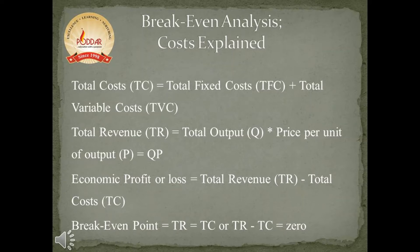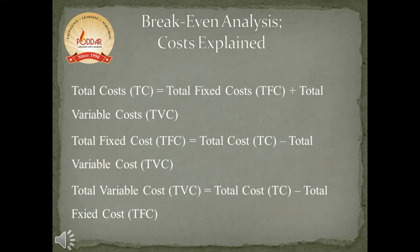We can also calculate break-even point with the help of total revenue and total cost, which equals total revenue minus total cost; break-even point occurs at zero. Total fixed cost equals total cost minus total variable cost, and similarly total variable cost equals total cost minus total fixed cost.